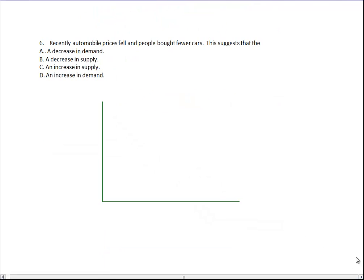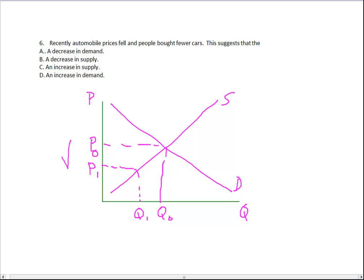Let's try six. Automobile prices fell and people bought fewer cars. So let's start. Price. Quantity. Upward sloping supply curve. Downward sloping demand curve. Equilibrium price and quantity. Now, what happened? Automobile prices fell. So we know prices had to go down. And we know people bought fewer cars.